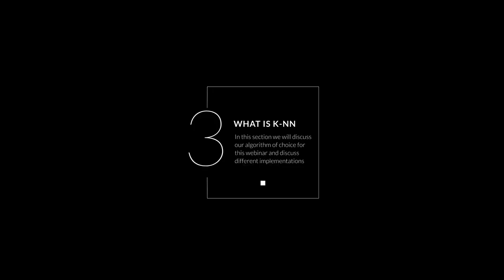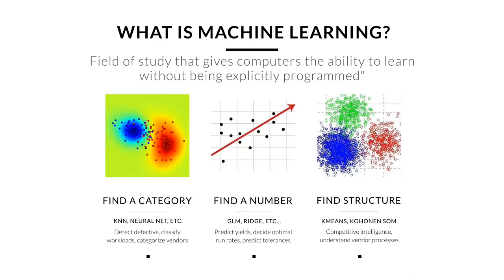Let's dive into what is K-Nearest Neighbors — why do we care, how does it scale, what does it matter? To talk about K-Nearest Neighbors, we first need to understand what machine learning is. Machine learning is the idea that computers can learn something without being explicitly programmed. Instead of hand-coded rules and hand-coded features, if you feed algorithms data they can actually learn patterns much more advanced than anything we could viably hand code.